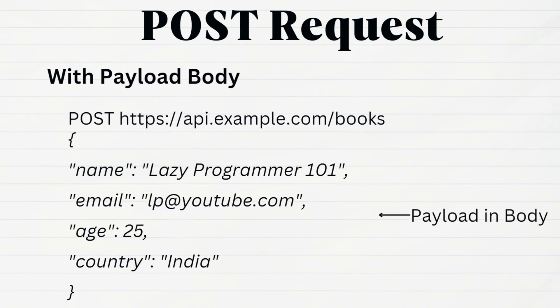Let us see one more example. We are posting a book, which will create a book resource. To create a resource at the server side, we need some details. We can provide those details as request parameters, but in the case of big and complex objects, it becomes very difficult to maintain a long URL. The better and safer approach is to send the resource-related data as a payload in the request body. To create a book, we send all the required details as a JSON payload in the request body, which will then be accessed at the server and used to create the required resource.